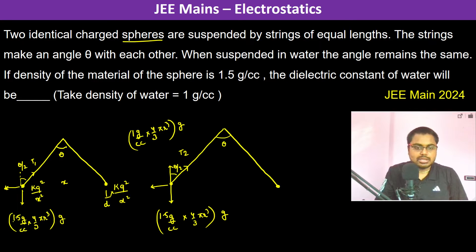So therefore we can clearly see that for the angle, you can see theta by 2, so this is also theta by 2 and this is also theta by 2. Therefore in both cases tan theta by 2 remains the same.